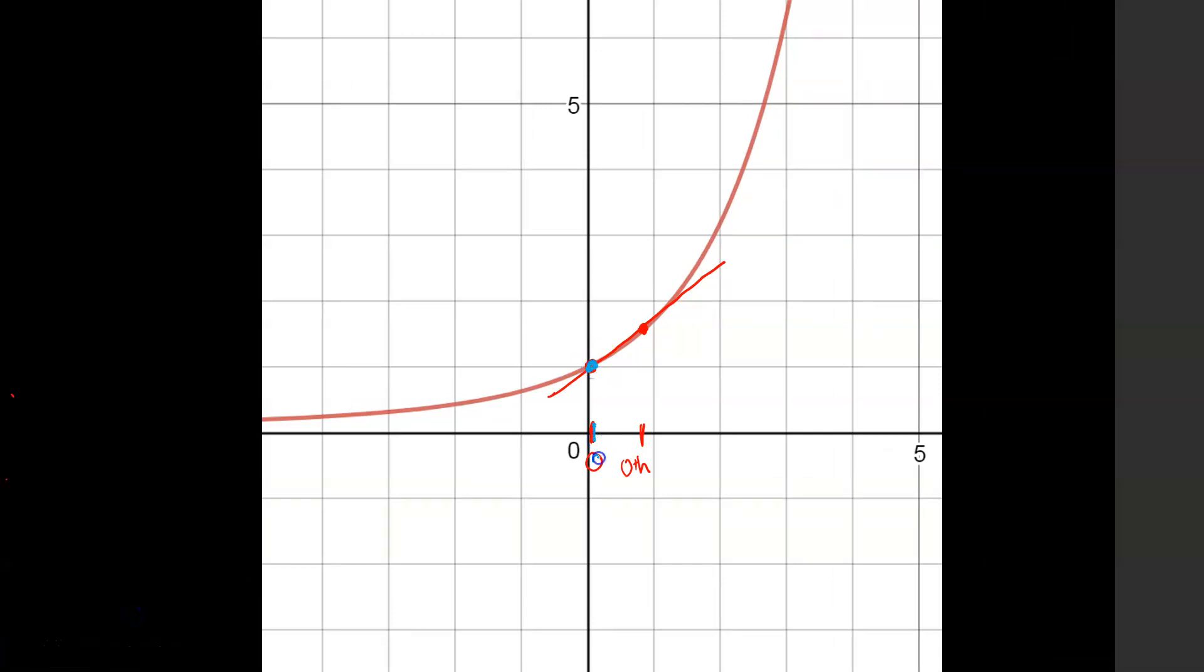So one point at 0, one point h units away, so that's at 0 plus h. Right now we have the slope of a secant line. We'll apply the limit as h goes to 0. One y value is e to the 0 plus h. The other y value is e to the 0. And 0 plus h minus 0 are our two x values.